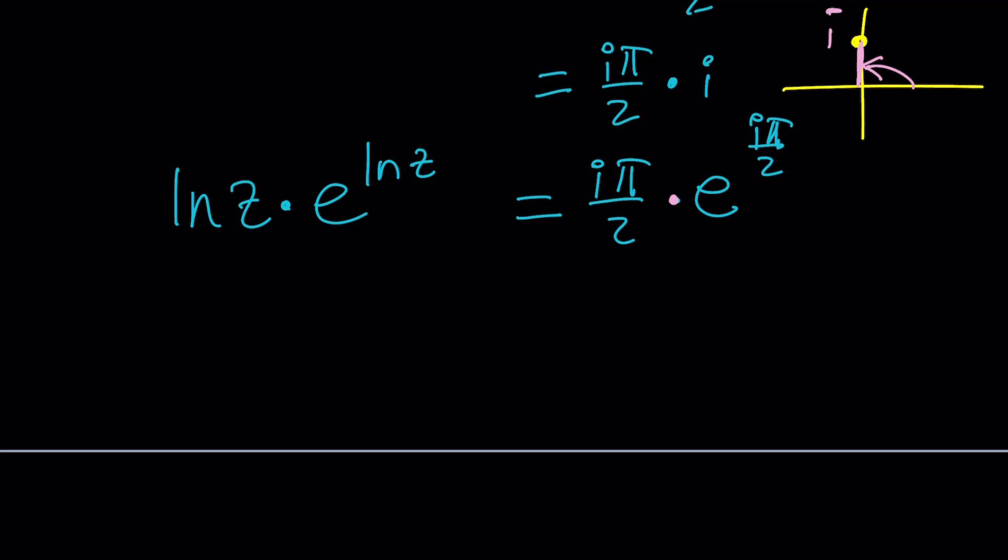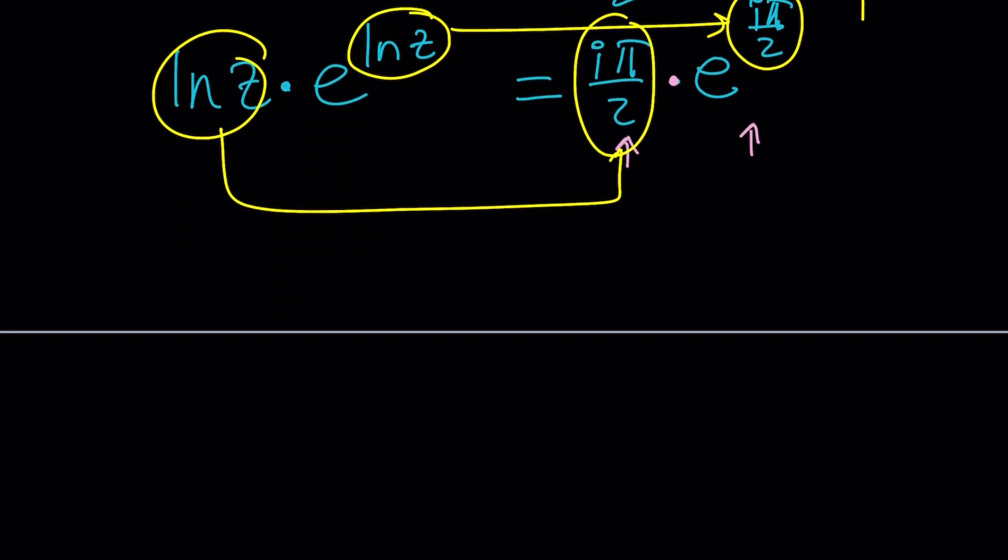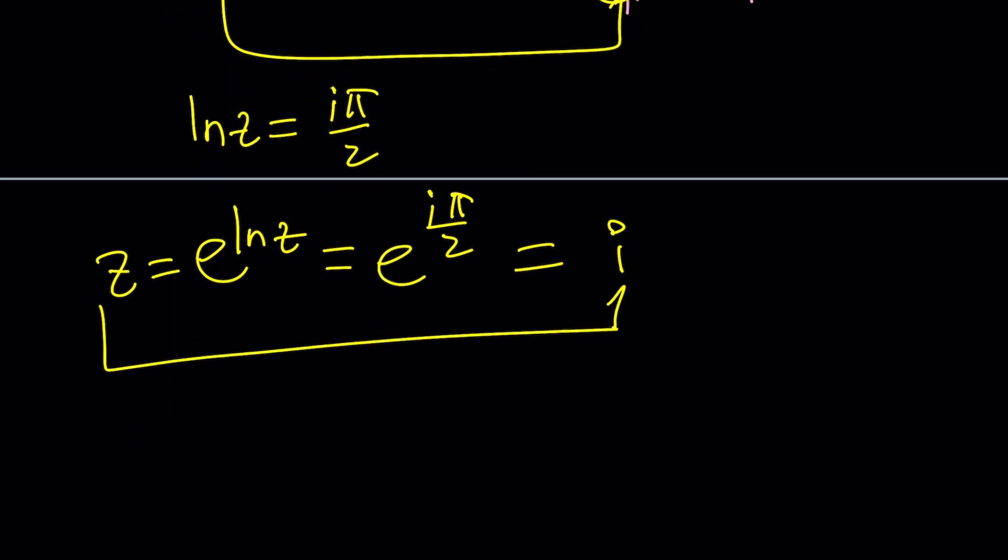So where do we go from here though? We have t to the t and e to the t. Hopefully you see what I see. What I mean is that this corresponds to this and this corresponds to this. So from here we get ln z equals i π over 2, or you can write this as e to the ln z which is z equals e to the power i π over 2. e to the i π over 2 is i, so z equals i is a solution.